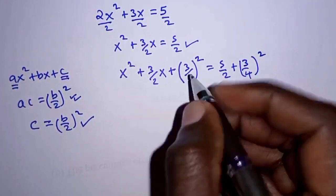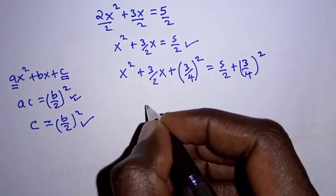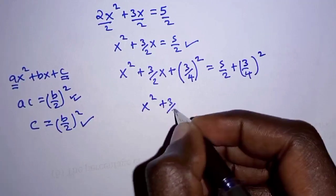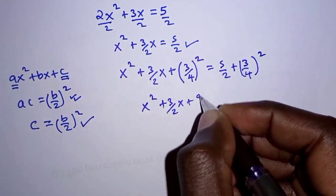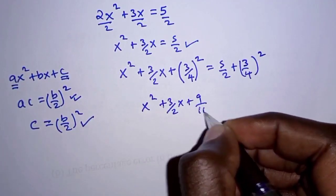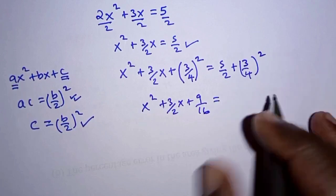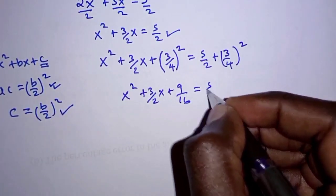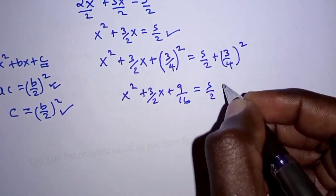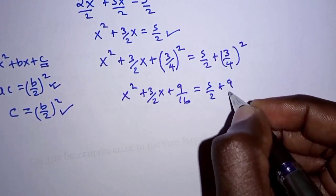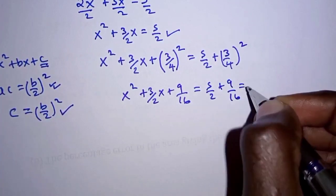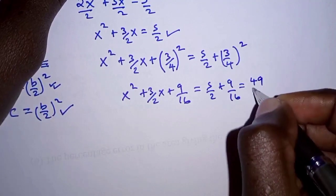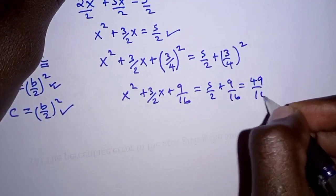Simplifying further, we have x squared plus 3 over 2x plus 9 over 16 on the left hand side, and on the right hand side 5 over 2 plus 9 over 16, which gives us 49 over 16.